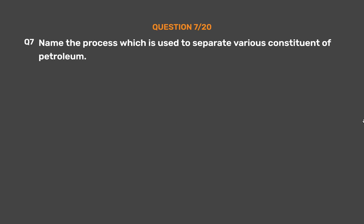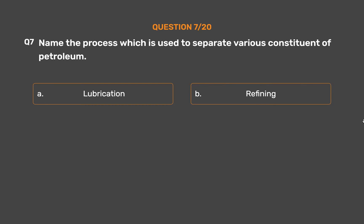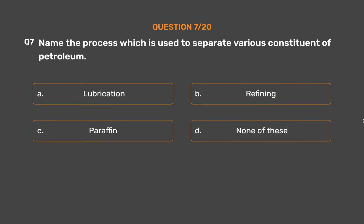Question number 7: Name the process which is used to separate the various constituents of petroleum. Option A: Lubrication. Option B: Refining. Option C: Paraffin. Option D: None of these.